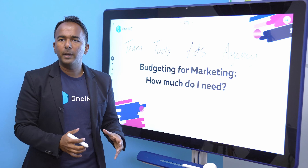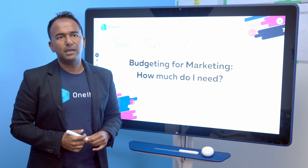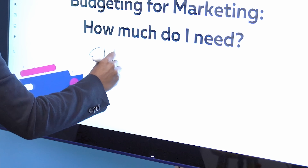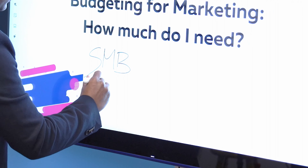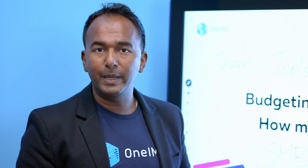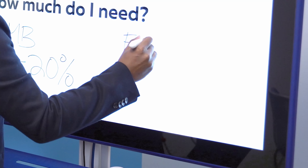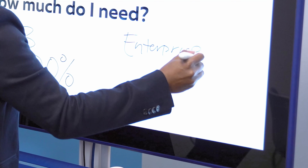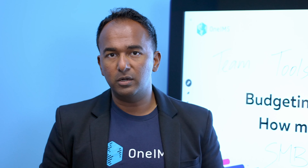When it comes to percentage of revenue — how much should I allocate to a marketing budget — it really depends on the size of your business. Small businesses are technically going to spend a higher percentage of their income than a bigger business. Small and medium businesses typically spend anywhere from 12 to 20% — they invest a lot back into their business. Enterprise companies might spend somewhere between 6% up to 10 or 12%, depending on how aggressively they're looking to grow.